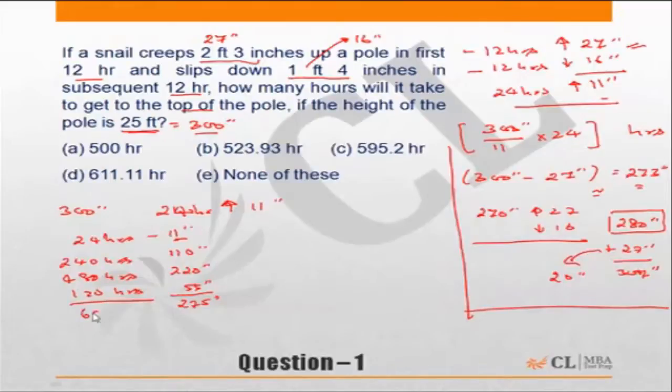So first of all, the answer cannot be A, B, or C. My answer has to be greater than 600. It is either D or E.